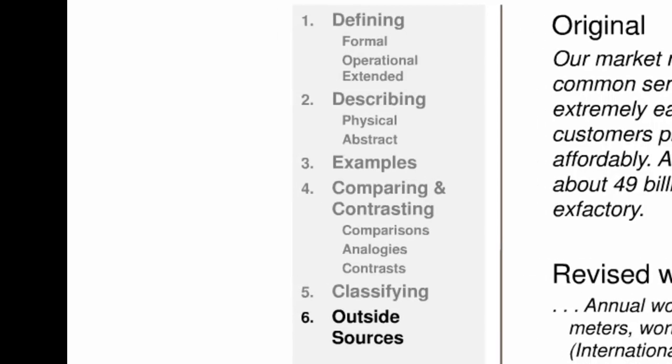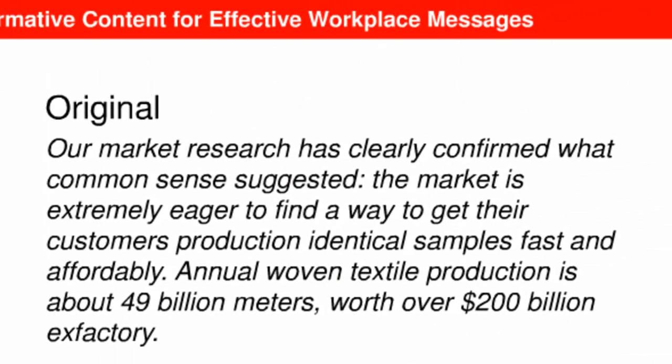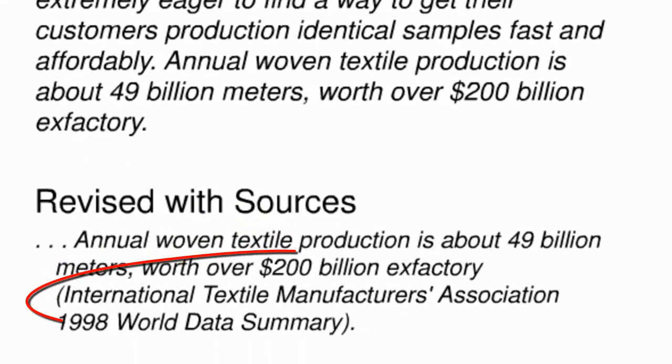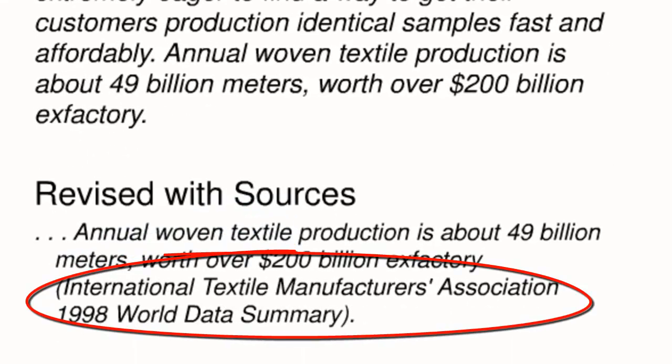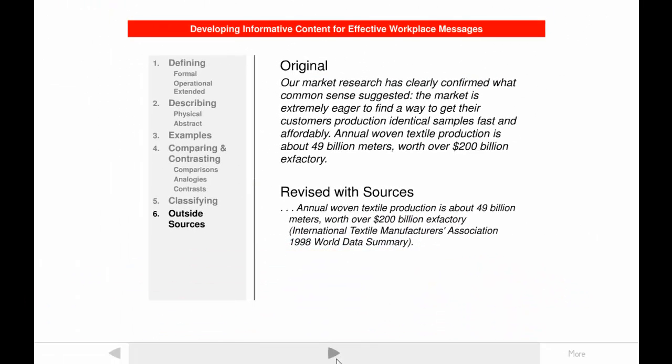Providing outside sources is the last of the six techniques for developing informative content. Citing an outside source as the origin of information is most relevant for overcoming audience unwillingness rather than inability, so I'll discuss the use of sources more thoroughly in the tutorial on developing persuasive content.